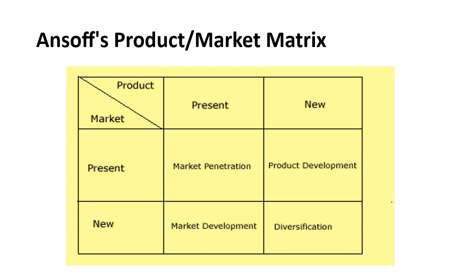The third situation is where the product is new but the market is the same. In the same market, we come up with a new product, an upgraded product, or an updated product. The strategy name is product development. The fourth and final one — which is the most risky but also most rewarding in many cases — is where both the product and market are new. That strategy is called diversification.